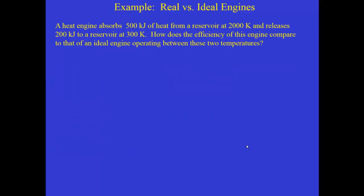So let's just do a very simple example where we're given an amount of heat that's absorbed and an amount of heat that's released for a heat engine and calculate the actual efficiency of the engine and compare that to the Carnot efficiency just to see how efficient the engine is. So here's a heat engine that absorbs 500 kilojoules from a reservoir at 2000 Kelvin and releases 200 kilojoules to a reservoir around room temperature at 300 Kelvin. So you can see that the difference between these two 500 minus 200 that must be how much work was done.